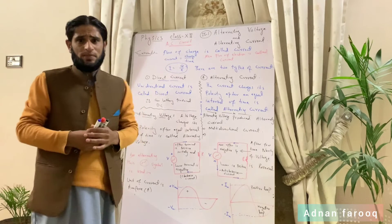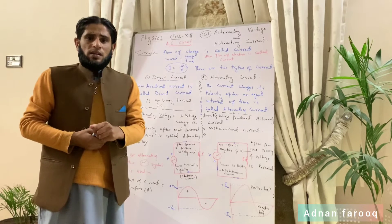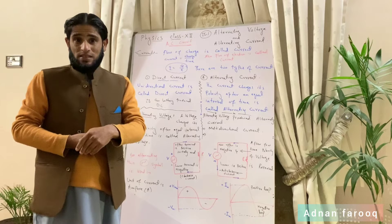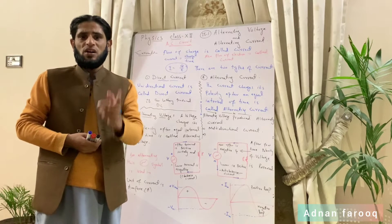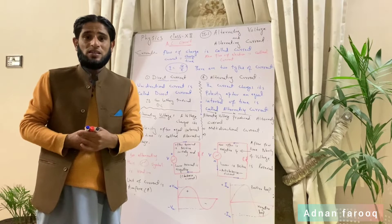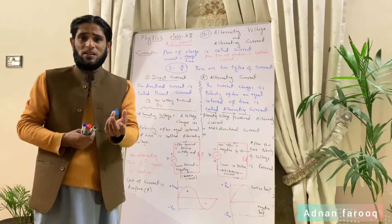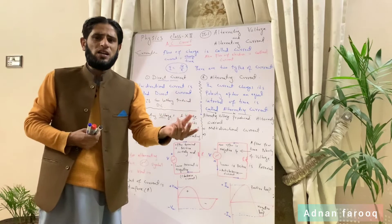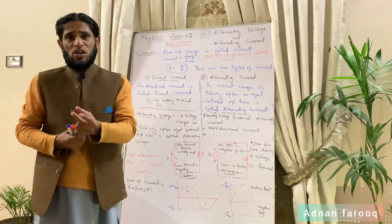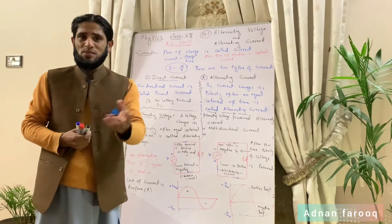What is alternating? The word alternating relates to current. There are two types of current. What is current? Flow of charge is called current. Electron is a charge, so flow of electrons is called current. جب بھی charge flow کرتا ہے، motion کرتا ہے، تو current بنتا ہے۔